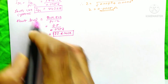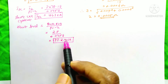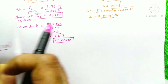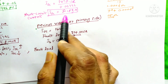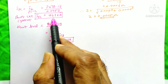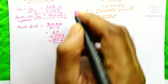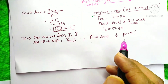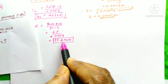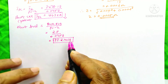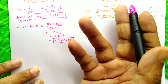Both the short circuit current and the fault level have decreased when compared to the secondary of the transformer. At the secondary, the short circuit current was 51.19 kA, but here it is only 46.3 kA. The fault level at the secondary was 36.8 MVA, and here it is 33.2 MVA. This is all because of the increase in per unit impedance due to the cable.